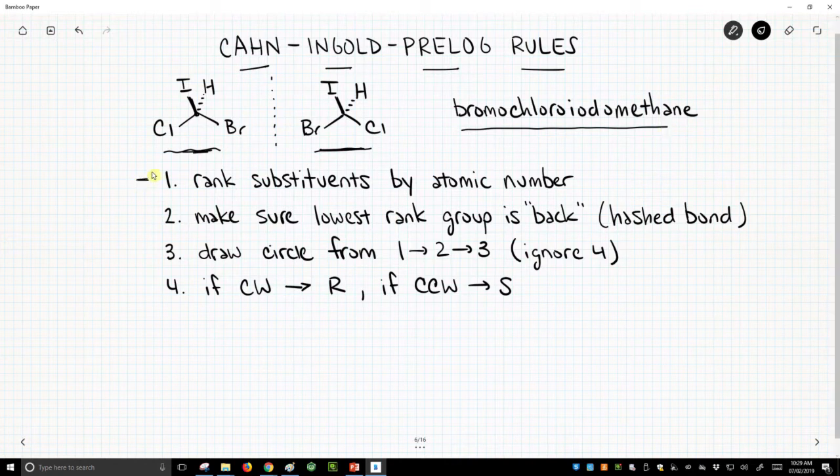Number one, we rank our substituents by atomic number. So in this case, iodine is one of our substituents. It has the highest atomic number. That's one. Bromine is second. Chlorine is third. And poor hydrogen is four.